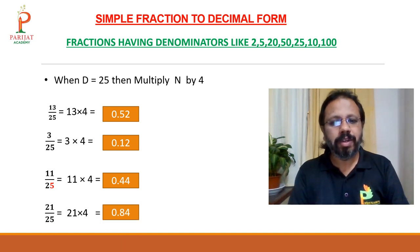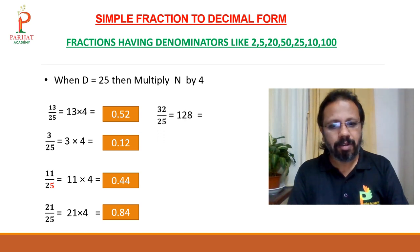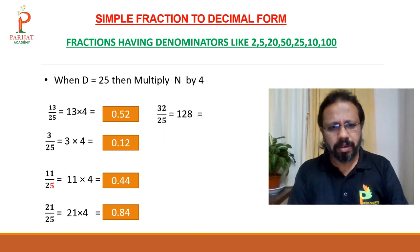32 upon 25: 32 times 4 is 128, so leave the last 2 digits and give the decimal — answer is 1.28. This is very simple fraction conversion into decimal form.